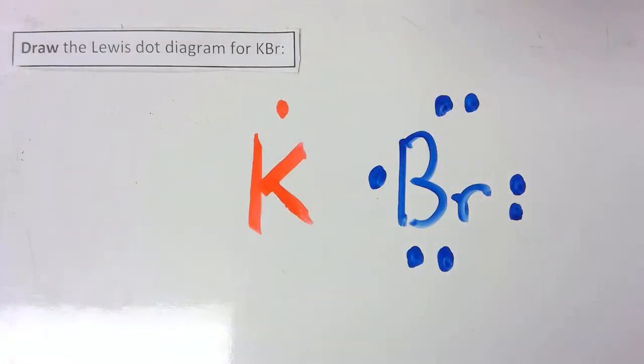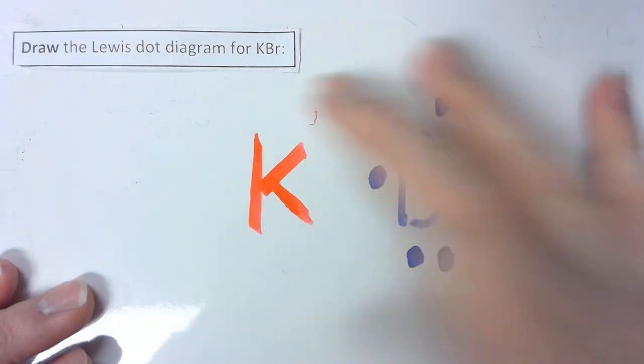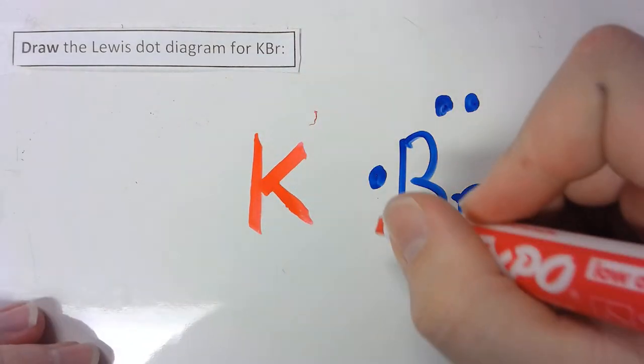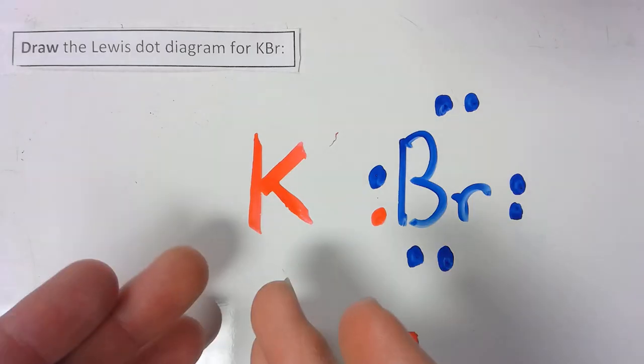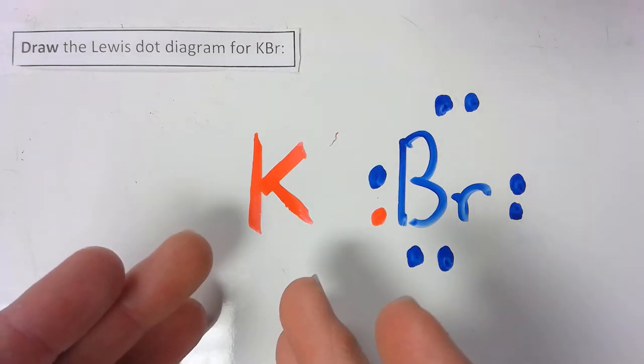This is a give and a take. So I'm going to expect the K here to give an electron to the Br. And the outcome here is that K, being the metal, should have no valence electrons left.